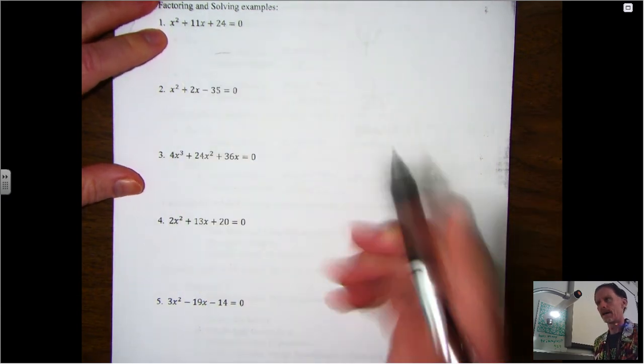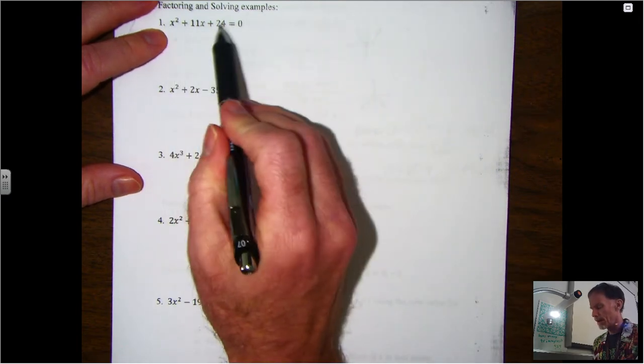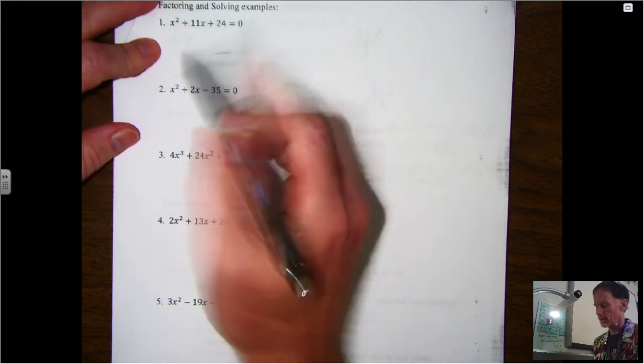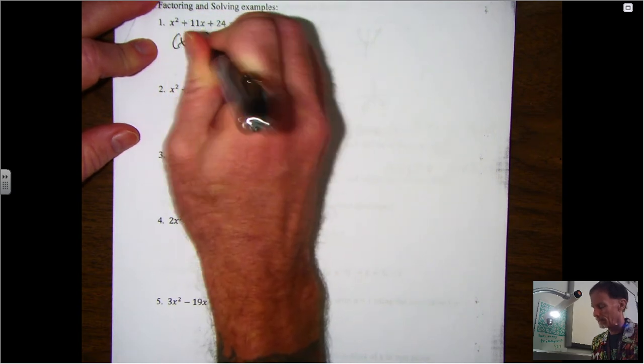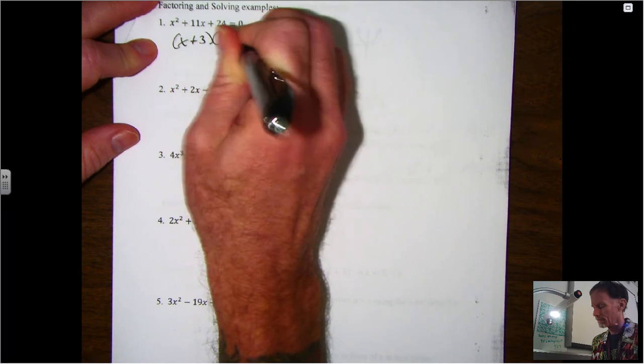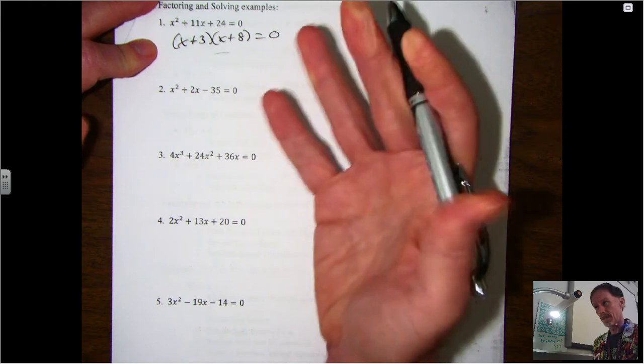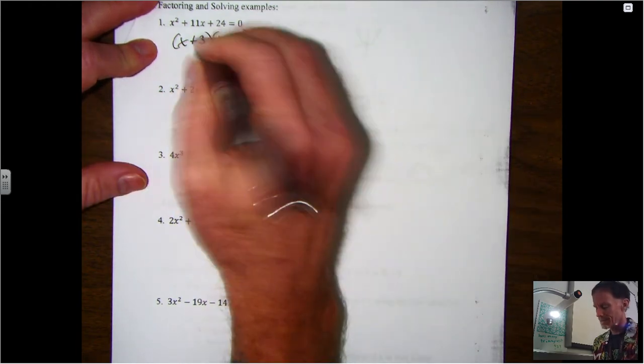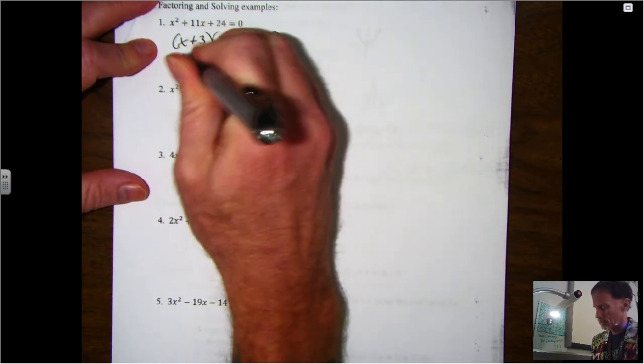But remember, folks, if we're factoring this, obviously we want them all to be equal to 0. I'm not going to try to trick you on that one. But if your a is 1, then we're looking for what can multiply to c and add to b. So what multiplies to 24 and adds to be positive 11? And that would be 8 and 3. The order doesn't matter, and then that's called factored form.